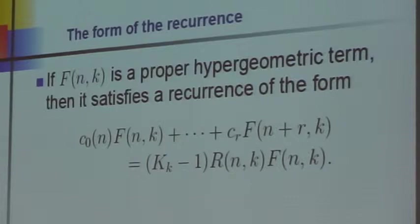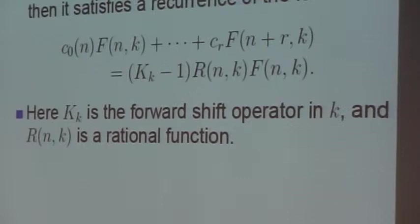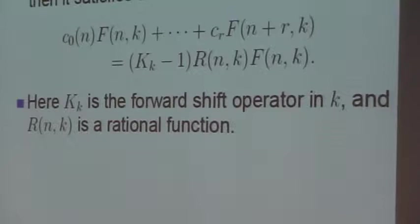I'll show you what it looks like in two variables when there are two summation variables. In this summand recurrence, capital K_s is the forward shift in little k, and R is some rational function that the computer tells you about—tells you exactly what it is.